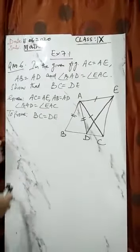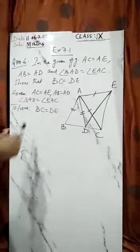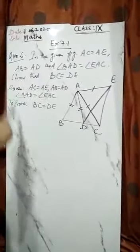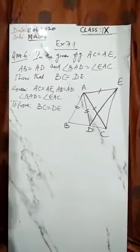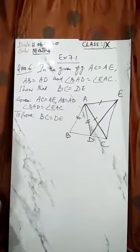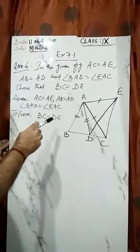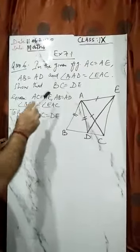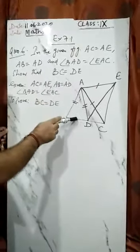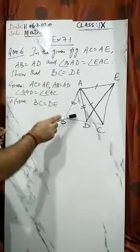Good morning students, in this video we'll solve question number 6 of exercise 7.1, that is chapter number 7 triangles. Very important question from examination point of view. The figure is given to you.